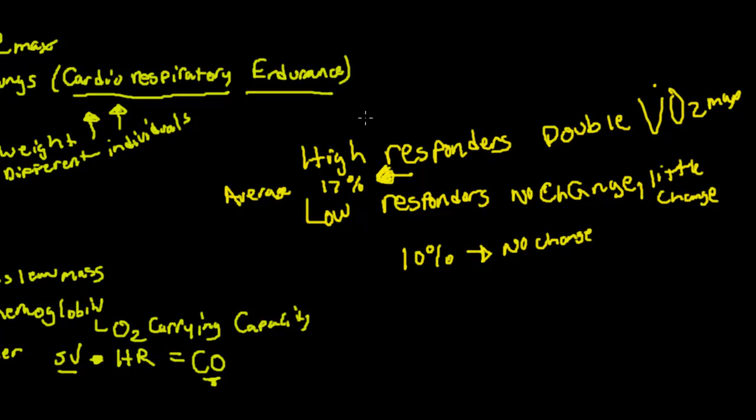For high responders, they may double their VO2 max with training. For the average person, we're probably going to get around a 17% change. For low responders, very little change at all.